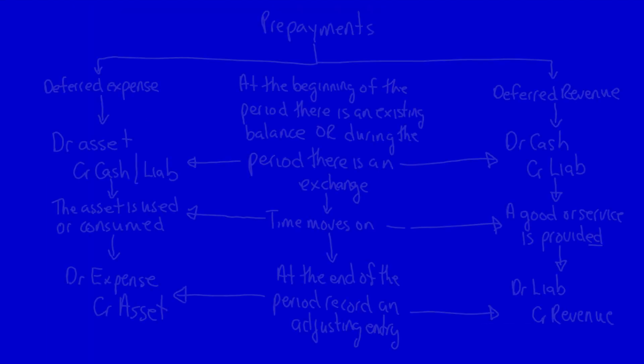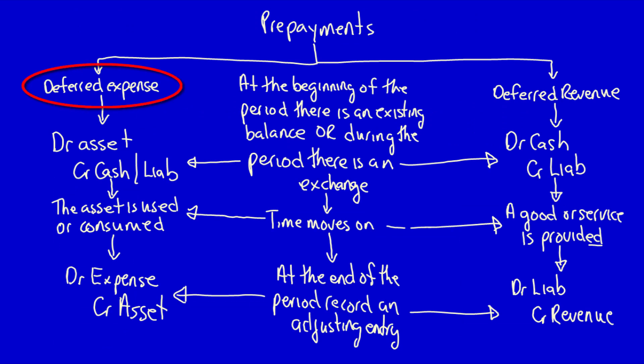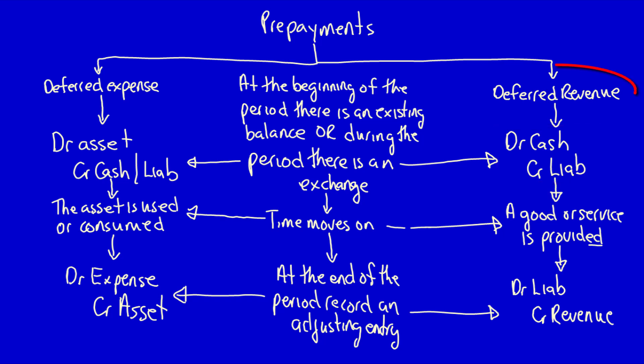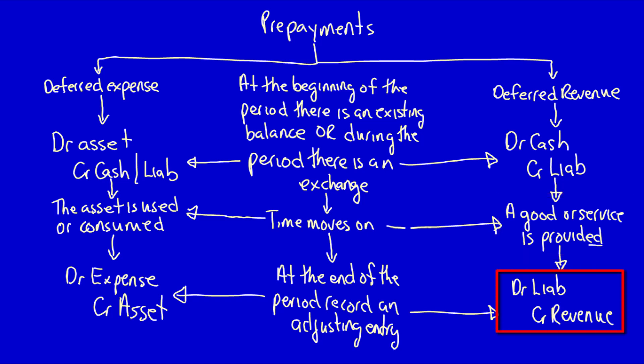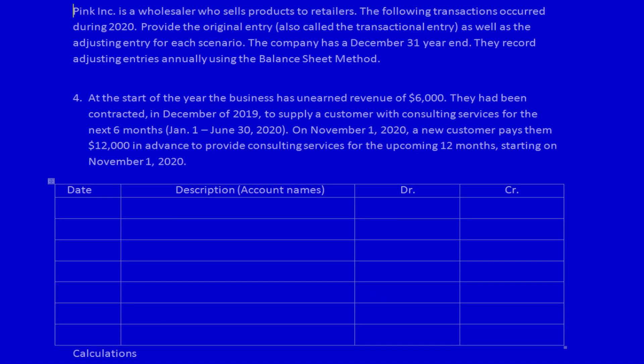Let's look at our chart, because we've not done this before. All our previous entries were deferred expenses, but this is not a deferred expense. At the beginning of the period we have a balance in our unearned revenue account — that's a liability. During the period there's an exchange between two parties: we receive cash and give away a promise to provide a service in the future, so this is a deferred revenue. As time moves on, a good or service will be provided to the customer, and at the end of the period we can record that the liability has been settled and recognize revenue.